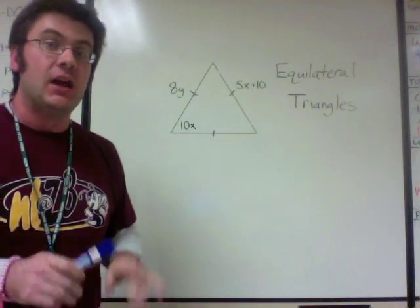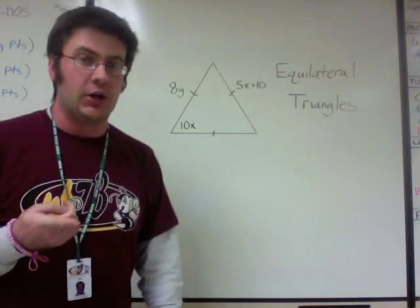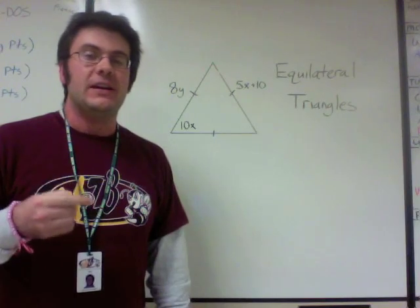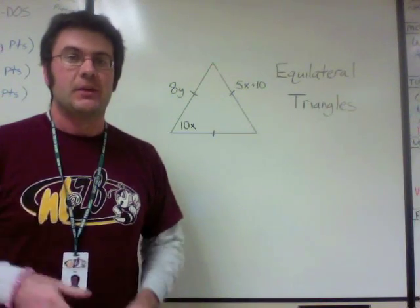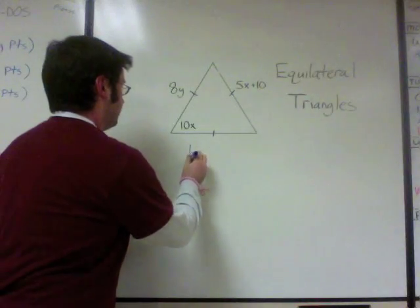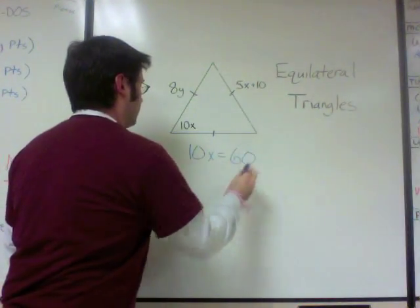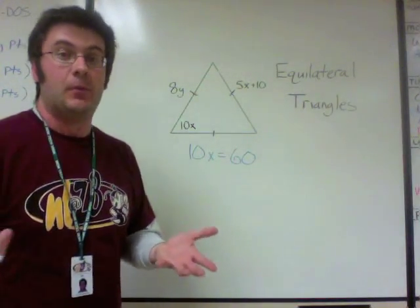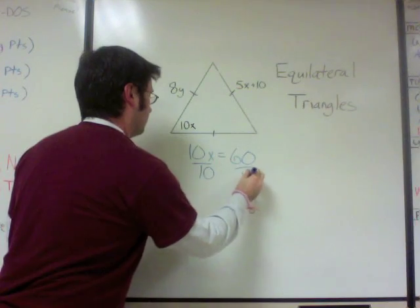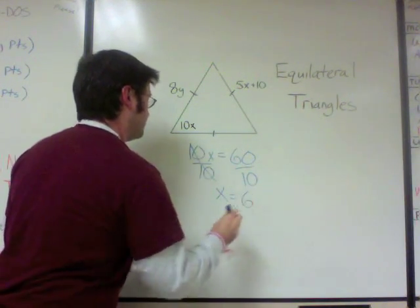First, we've got to solve for x, and we can do that just using 10x. Every angle in an equilateral triangle is equal to 60 degrees, so we can say that 10x equals 60. Then all we have to do is divide both sides by 10, and x equals 6.